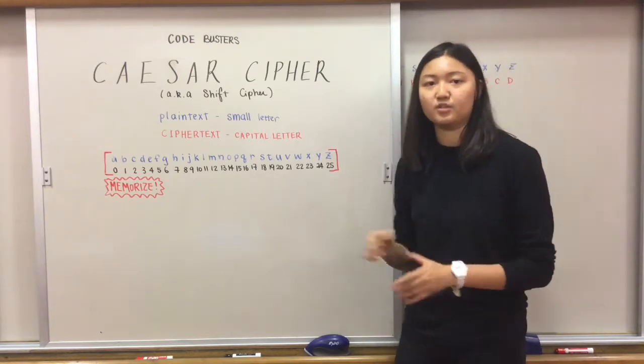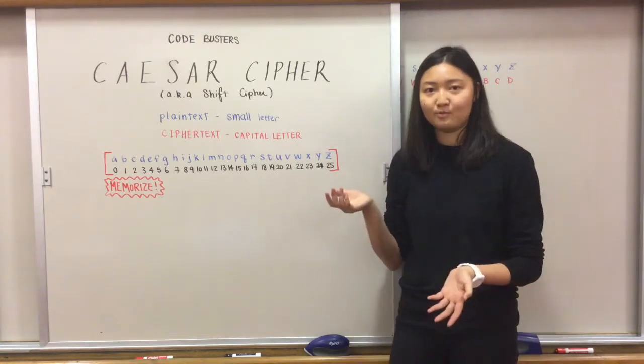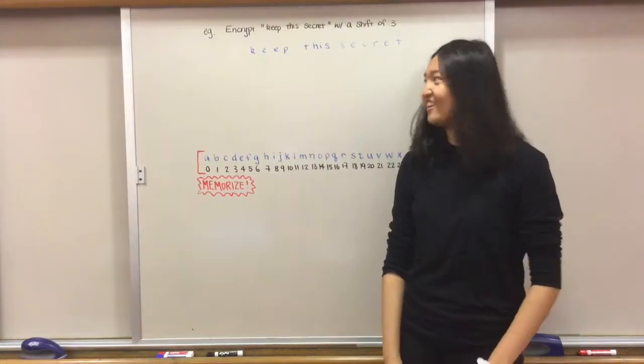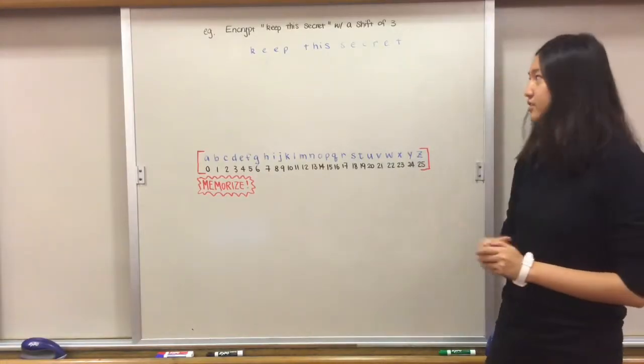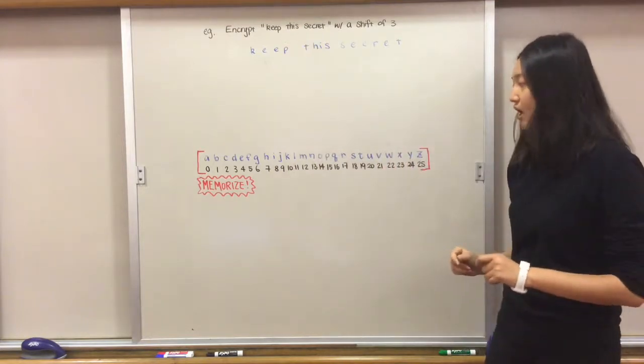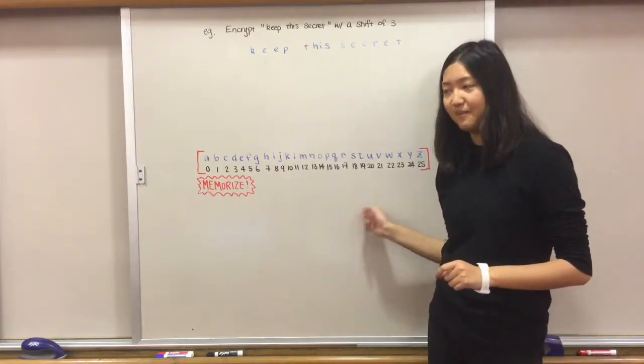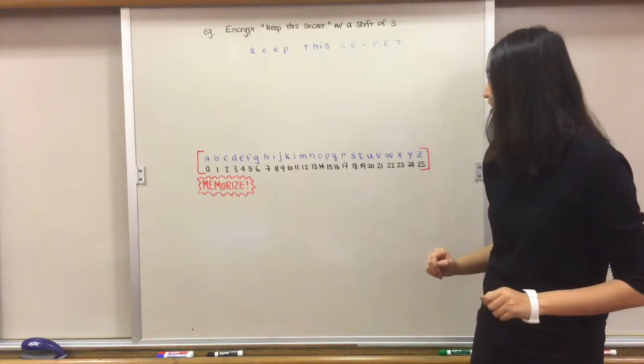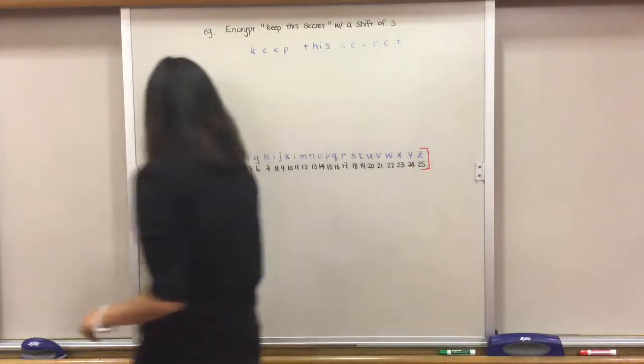This is something really important that you need to memorize because this will be very helpful for your future code busters experiences. We are going to retry the first encryption example with the mathematical method.